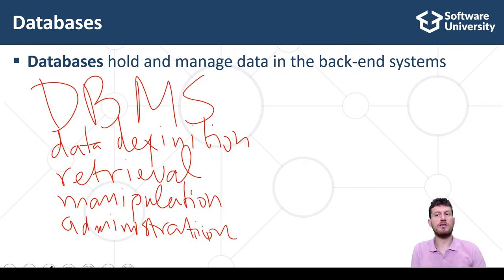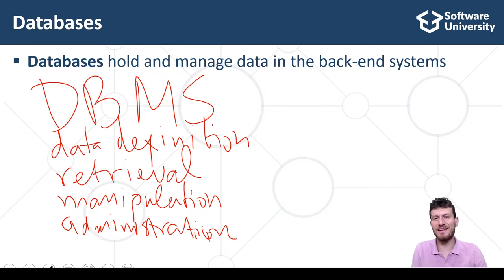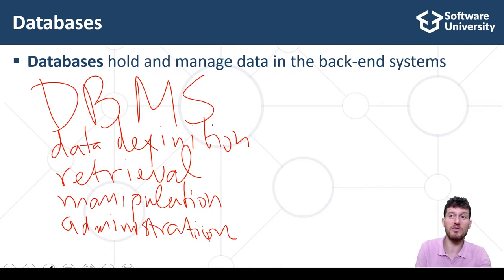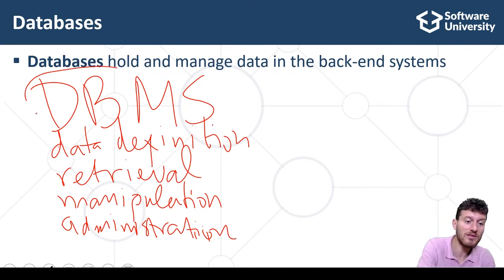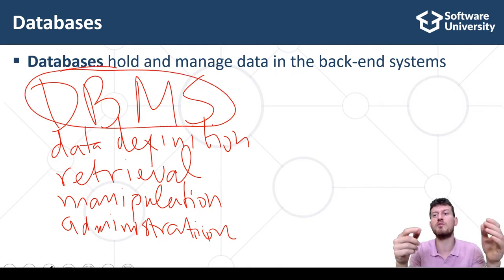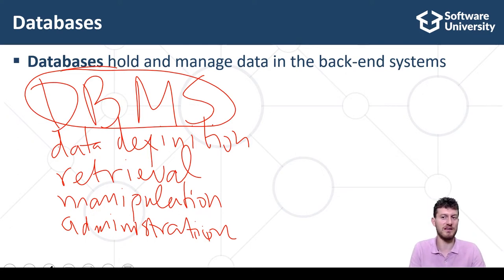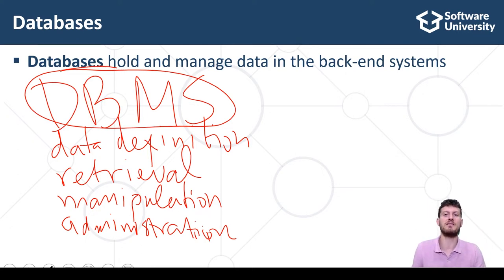Data administration covers users, roles and access control, concurrency control, monitoring, replication, backup and recovery, and others. Modern software systems use a DBMS system to manage data instead of implementing the data management internally.